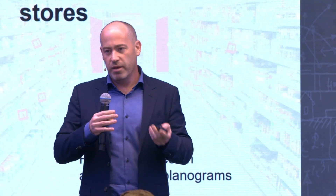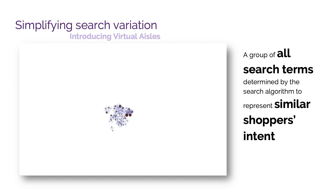You have to simplify. That's the second core principle: you have to simplify this problem. What we call virtual aisles — we try to understand from the search algorithm's perspective which searches result in very similar aisles. If we can cluster those groups into virtual aisles, now we have something we can optimize against. We no longer have thousands of different variants — we have eight or ten clusters, and now we know in which clusters our products are competing and how.